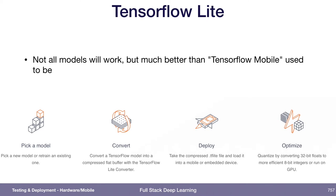The way TensorFlow Lite works is you convert a TensorFlow model into the TensorFlow Lite format with the TensorFlow Lite converter. Then you have a .tflite file, which you can load into the TensorFlow mobile framework on your mobile device, which will then run it. Optionally, you can also quantize your weights, which are usually 32-bit floats — you can quantize them down to 16-bit or even 8-bit integers.